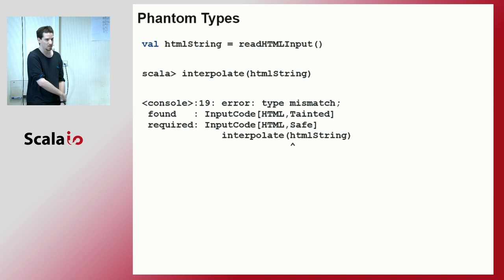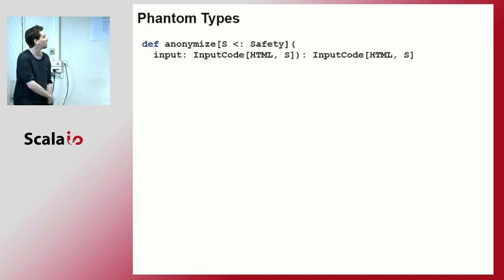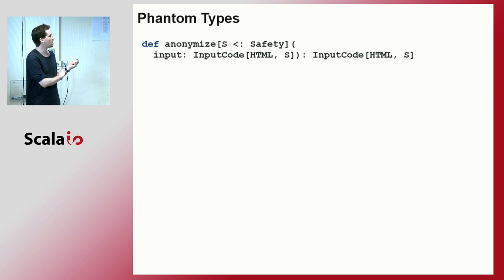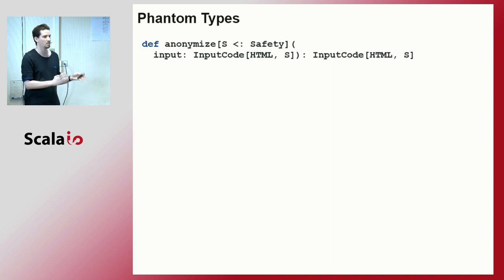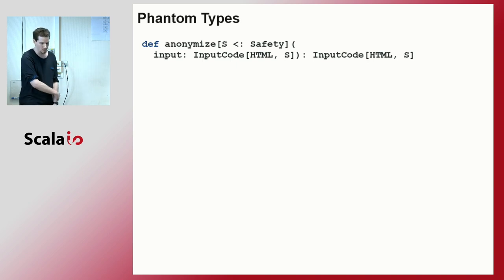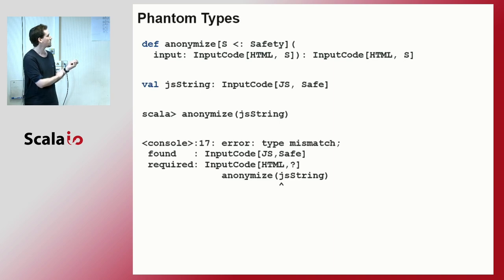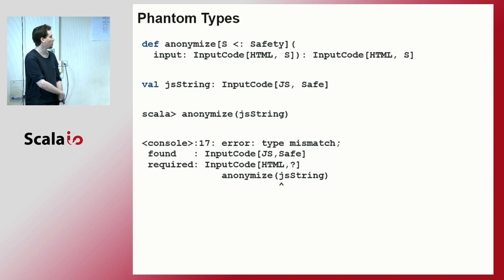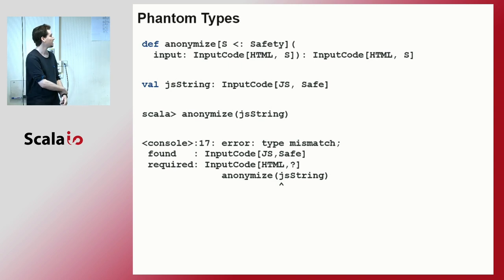So if I read some HTML input, I mark it as tainted and the compiler knows — you won't be able to do anything unsafe with it. We define sanitizeHTML which takes tainted code and converts it to safe code. Ideally, that's the only way to construct safe code, so the compiler tells you: you can't convert arbitrary strings to safe. You have to pass through the sanitization function. Then interpolation only accepts safe HTML. If we try to interpolate tainted code in a place where safe code is required, the compiler tells us we're wrong. We can also write generic functions that ignore certain parameters, like anonymizing HTML regardless of safety state.